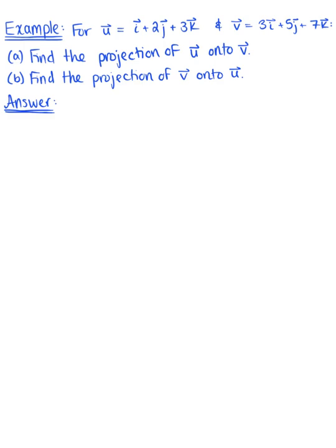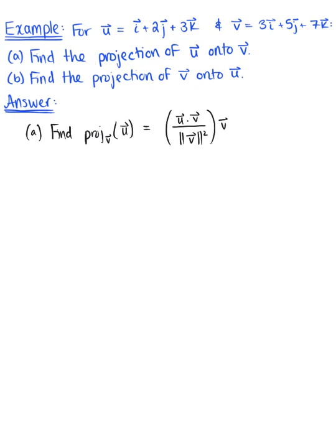For vector u and vector v, find the projection of vector u onto vector v, and then find the projection of vector v onto vector u. In part a, we want to find the projection of vector u onto vector v. This is a direct application of the formula: vector u dot vector v, divided by the magnitude of vector v squared, multiplied by vector v.